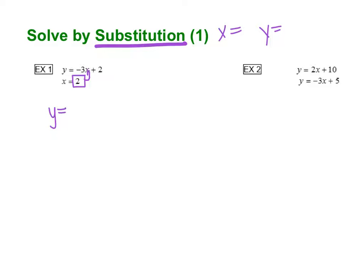What that does is it gives us an equation with only one variable which lets us solve for that variable. So I plugged in a 2 for the x. y is already solved for, so we just have to simplify it. Negative 3 times 2 is negative 6 plus 2, and negative 6 plus 2 is negative 4.